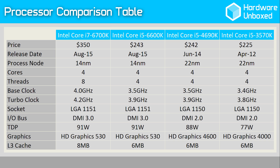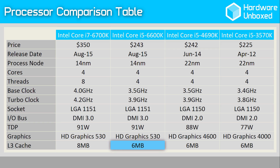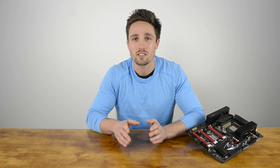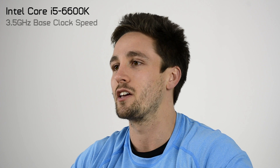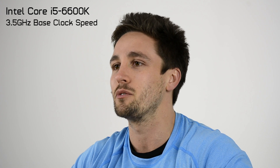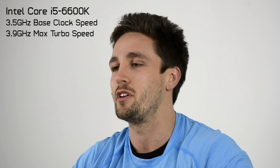The key missing ingredient is hyper-threading, which affords the 6700K 8 threads, meaning the 6600K is limited to 4 threads. The L3 cache has also been reduced from 8MB to 6MB, no different to the Haswell Core i5s. When compared to the 6700K, the 6600K is also clocked lower, though this is a non-issue as both are fully unlocked CPUs. Still, for those wondering, the 6600K features a 3.5GHz base clock with a maximum single-core turbo frequency of 3.9GHz. Keeping that in mind, let's head over to the benchmarks.